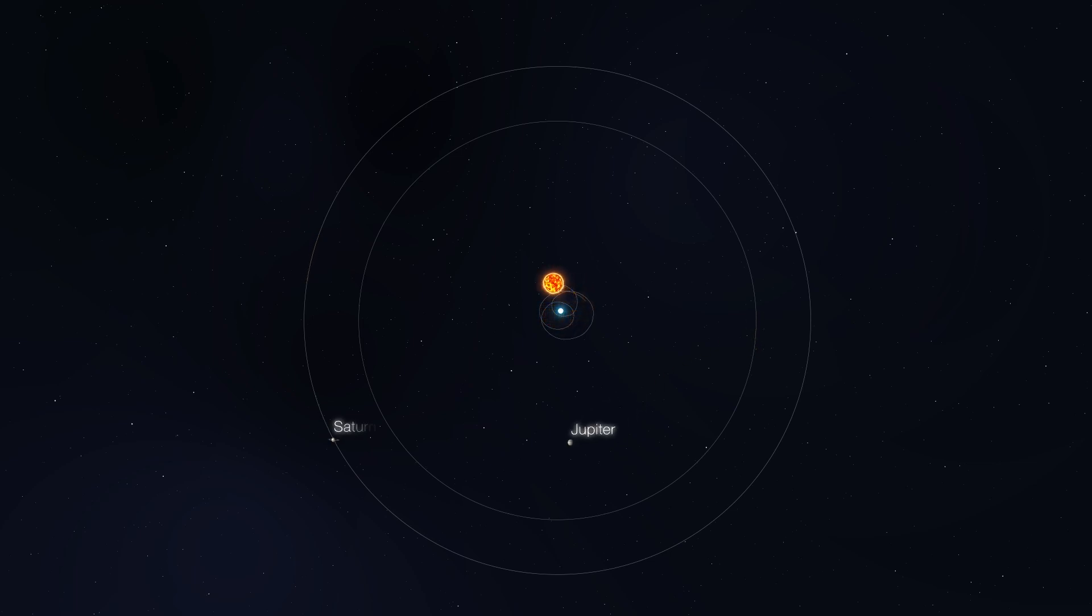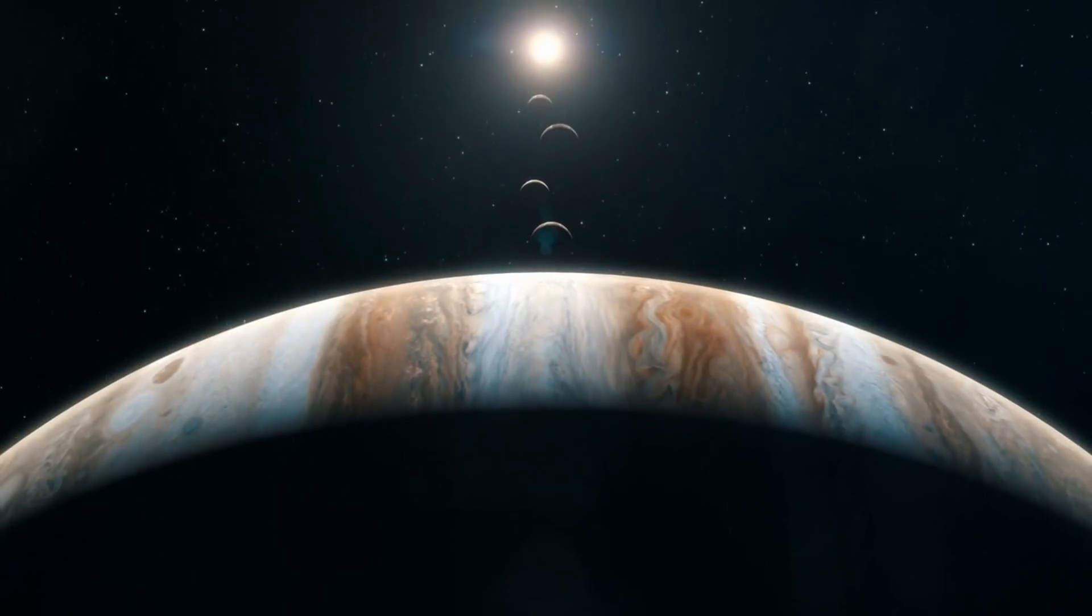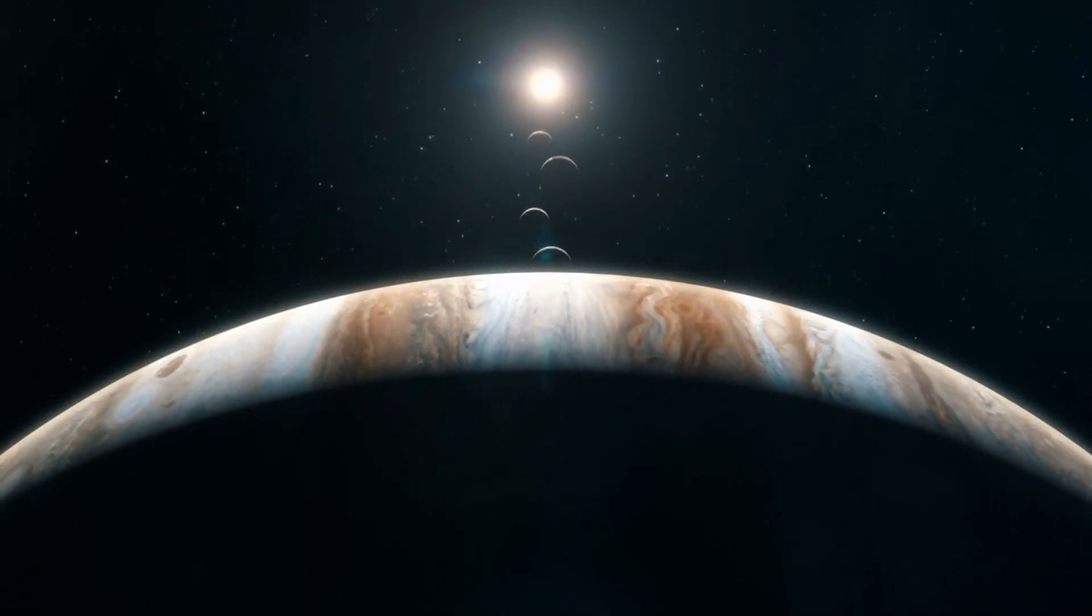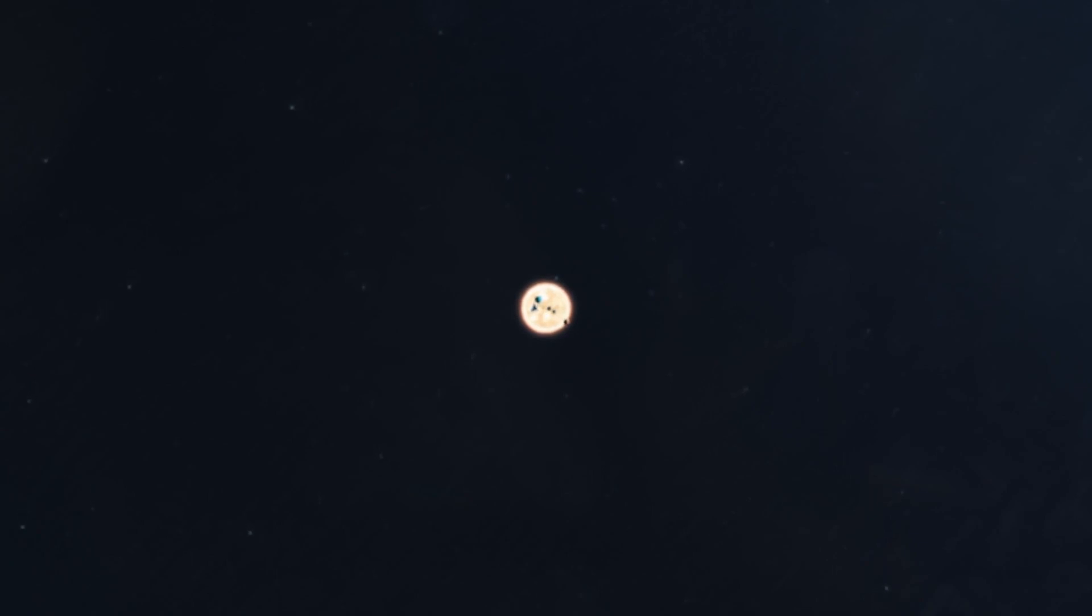For example, when Jupiter and Saturn are aligned on one side of the solar system, their combined gravitational pull can shift the barycenter to a point outside the visible surface of the sun. This happens because the mass of Jupiter and Saturn together is substantial enough to alter the center of gravity of the entire solar system. These gravitational interactions are crucial for understanding not just the motion within the solar system, but also understanding how it moves within the galaxy.